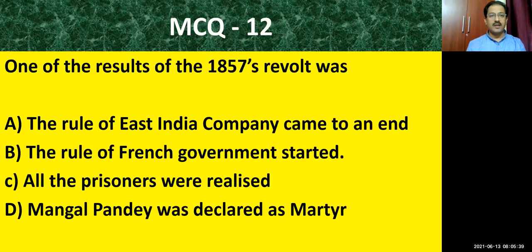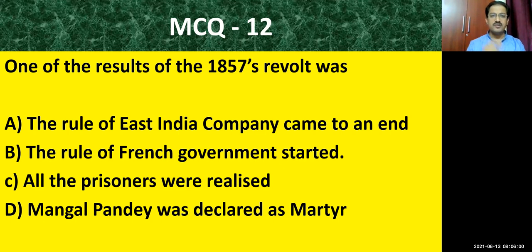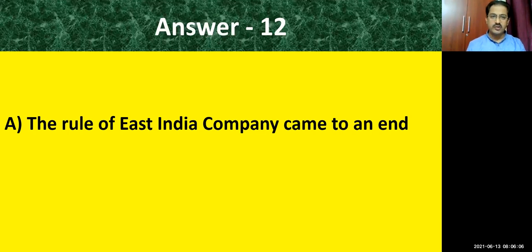MCQ question number twelve: one of the results of the 1857 revolt — options are: the rule of East India Company came to an end; the rule of French government started; all prisoners were released; Mangal Pandey was declared as Martyr. The correct answer is option A: the rule of East India Company came to an end.